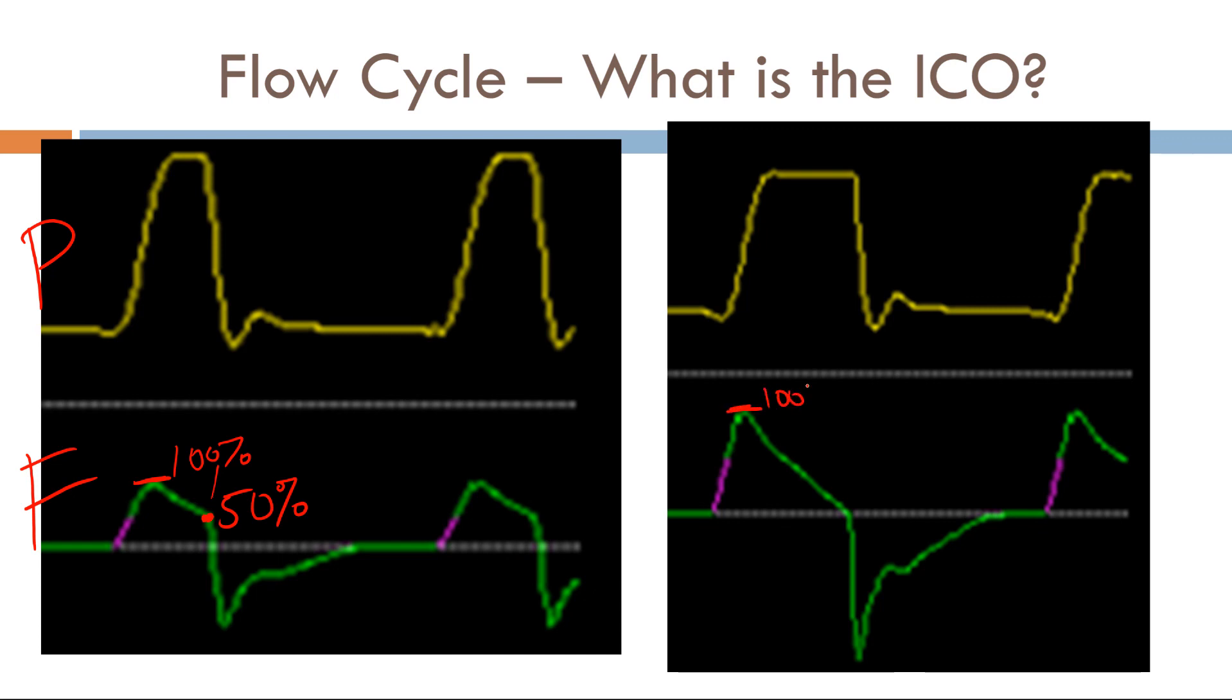Here's 100%. And over here they're cycling of the breath right around here. So here the ICO is 1% because it's 1% of the peak inspiratory flow.